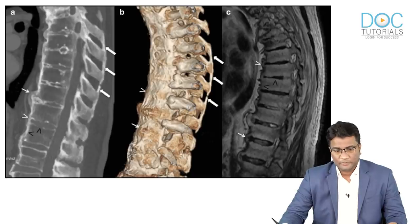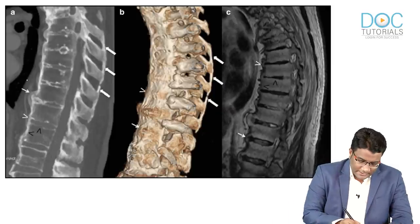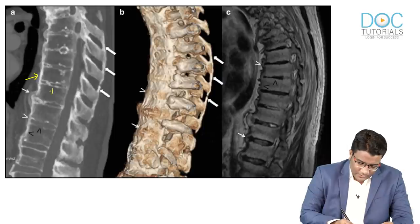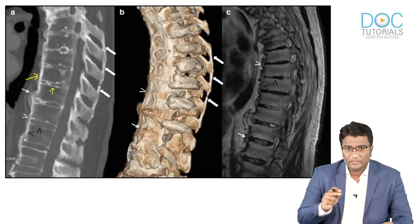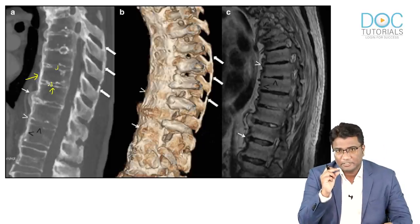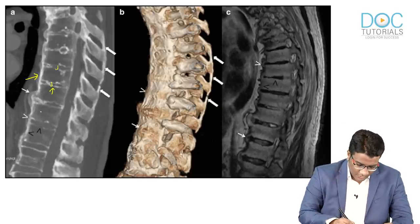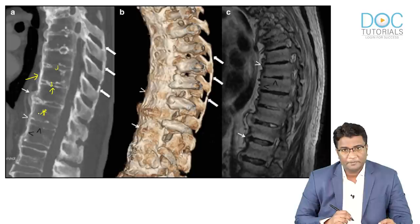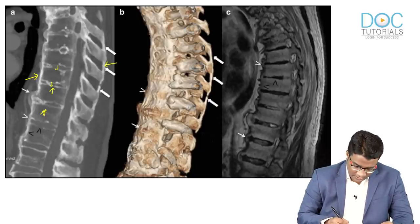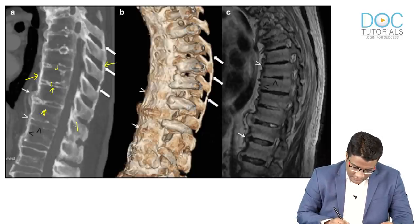Looking at these ankylosing spondylitis images, findings are better seen here: calcification of the anterior longitudinal ligament, sclerosis of the ends of the intervertebral discs, reduced intervertebral disc height, osteopenia, and posteriorly there is supraspinous ligament calcification and calcification of the interspinous ligament.